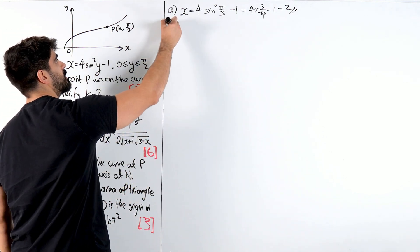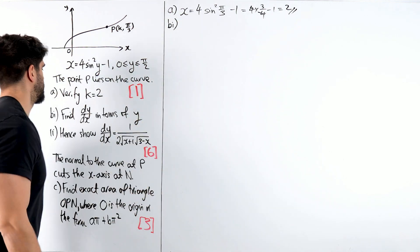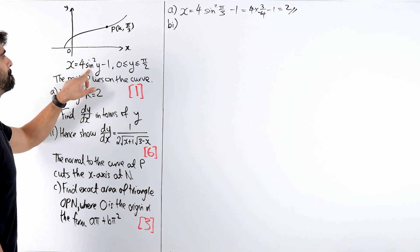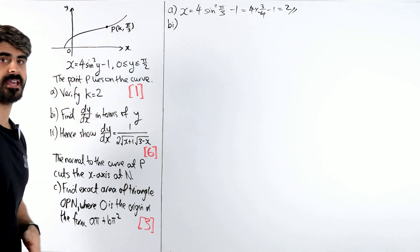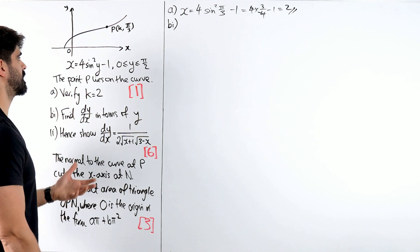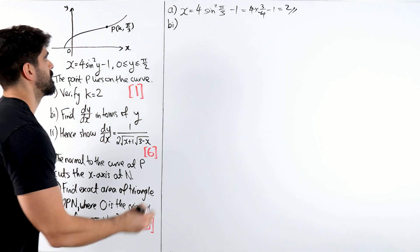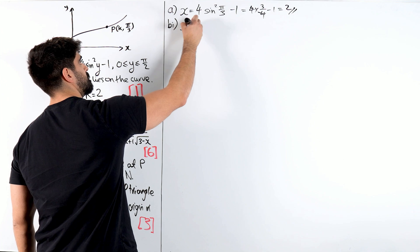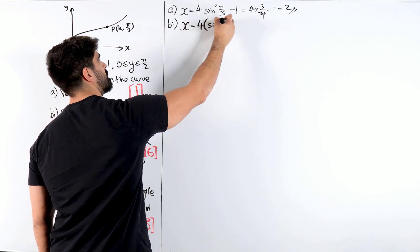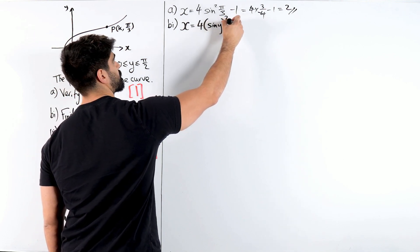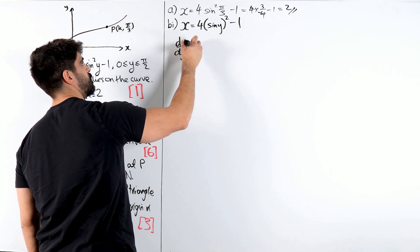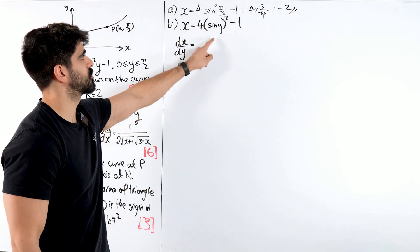I guess this is the juicy part, find dy by dx in terms of y. Now this is a power function. Whenever you see powers, you immediately think power function. So we have x equals 4 and you're going to rewrite it as sin y to the power 2 minus 1. And we're going to differentiate that with respect to y.